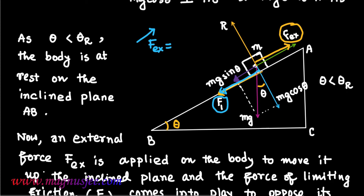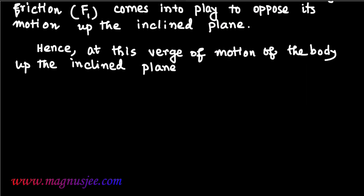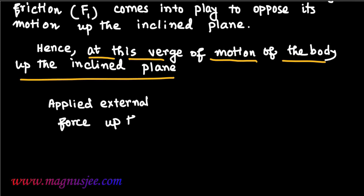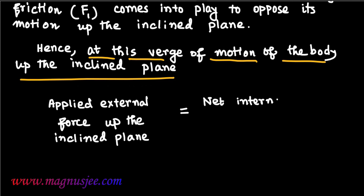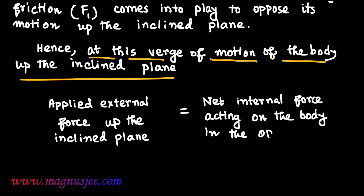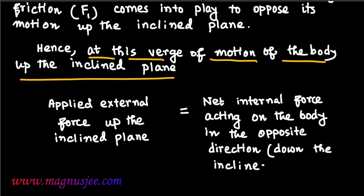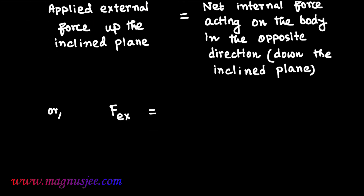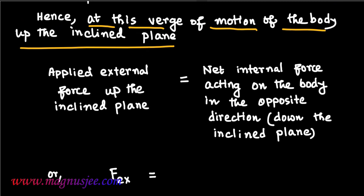Fex acts up the inclined plane, while mg sin theta and the limiting friction FL both act down the inclined plane. At the verge of motion, the applied external force equals the net internal force in the opposite direction: Fex equals mg sin theta plus FL.